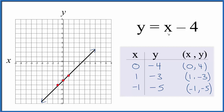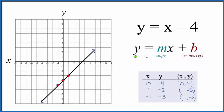Let's use the slope-intercept formula to check our work. With y equals mx plus b, b is the y-intercept — that's where the line crosses the y-axis. The y-intercept is minus 4, so we'd expect our line to cross the y-axis down at minus 4. For the slope, m, we have a 1 in front of the x — it's not written, but it's there.